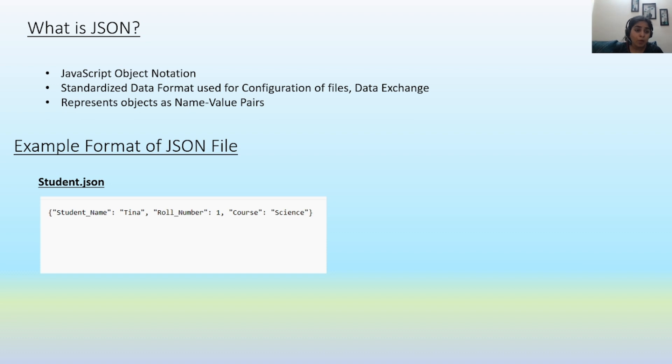Now what is JSON? The full form is JavaScript Object Notation, and this is a standardized data format mostly used for data exchanges and configuration files. The example format of a JSON file is mentioned here. This is a student.json file and the structure or format is similar to dictionary.